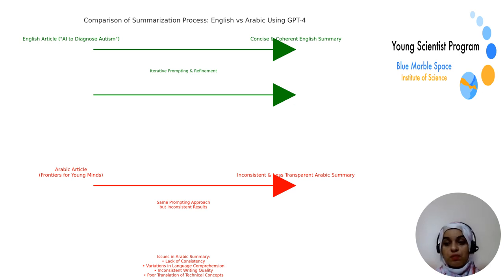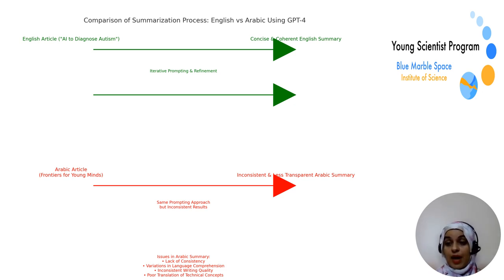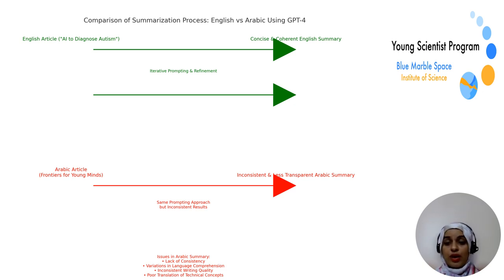When I conducted myself an experiment using prompt engineering on ChatGPT 4.0 to summarize two scientific articles, one in English and the other in Arabic, I observed a stark contrast in the quality of the summaries generated. For the English article titled 'Using Artificial Intelligence to Diagnose Autism,' I applied a series of iterative prompts to refine the summary. The result was satisfactory — the summary was concise, coherent, and accurately captured the essence of the original article, demonstrating the model's strong capability to handle English content.